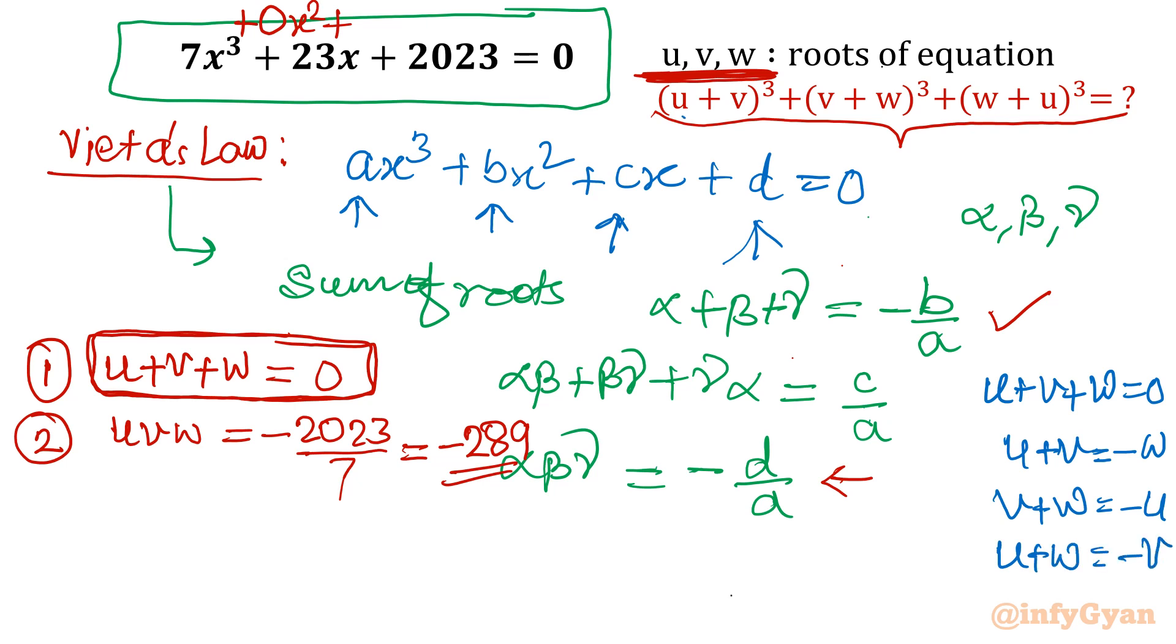So here I will put u + v. What is asked? v + w = -u, here I will write -u. And w + u, I am going to write -v. So ultimately what is asked? (u+v)³ + (v+w)³ + (w+u)³. And after putting these values, this was our equation 1. Only from that equation, we can generate the three equations.